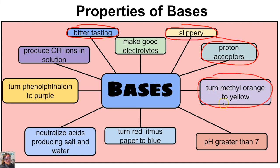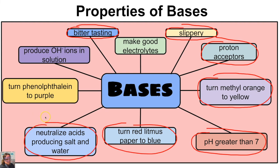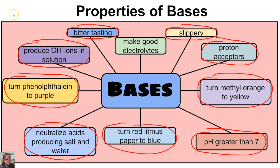Bases are proton acceptors according to the Brønsted-Lowry model of acids and bases, which we'll learn about later. Bases turn methyl orange to yellow. Bases have a pH greater than seven. Bases turn red litmus paper blue. Bases neutralize acids producing salt and water. Bases will also turn phenolphthalein to purple — another type of indicator we'll discuss — and last but not least, bases produce OH⁻ ions when dissolved in solution according to the Arrhenius model.